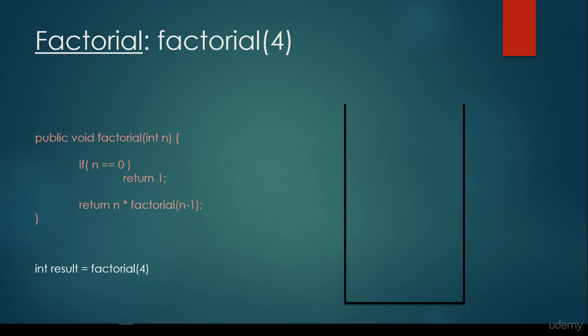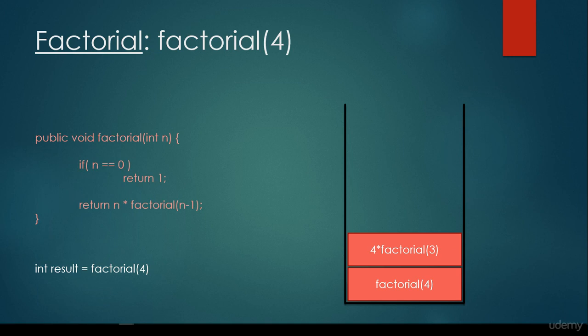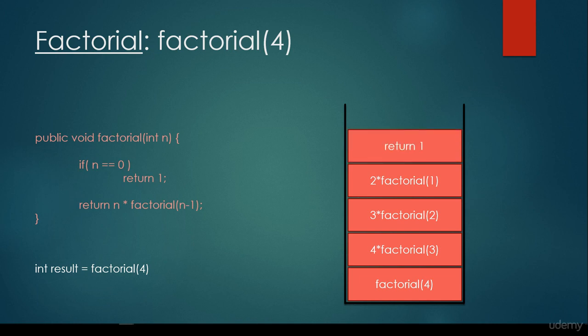This is how we implement the factorial in a recursive manner. To calculate factorial of 4, we don't know the answer directly, so we push it to the call stack. But we can reduce this to a sub-problem: 4 times factorial of 3. That's not the base case, so we call factorial with 3, giving us 3 times factorial of 2, then 2 times factorial of 1, then 1 times factorial of 0.